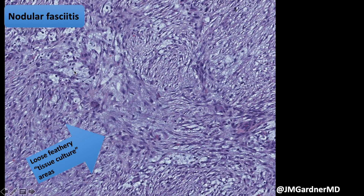Look at the myxoid cystic breakdown — it's subtle, but you can see little myxoid bluish pockets that are breaking down and degenerating, and then these loose feathery areas, or so-called tissue culture areas. Other areas will have little short fascicles of myofibroblasts.